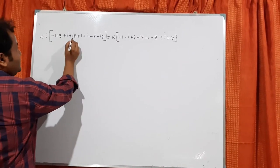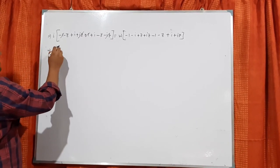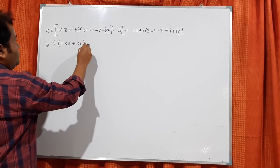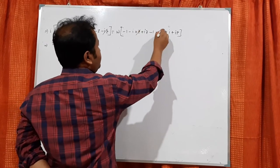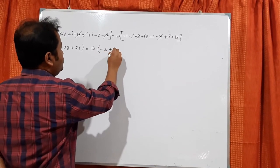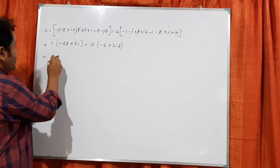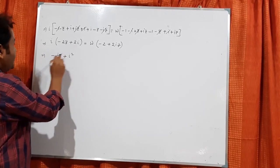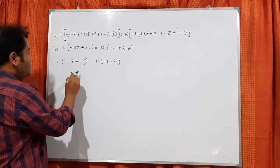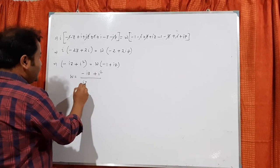After cancellation, the left side gives i times (-2z plus 2i) and the right side gives w times (-2 plus 2iz). Dividing both sides by 2, we get i times (-z plus i) equals w times (-1 plus iz). So w equals i(i minus z) divided by (iz minus 1), which simplifies to (-iz plus i²) divided by (iz minus 1), giving w = (-iz minus 1)/(iz minus 1).